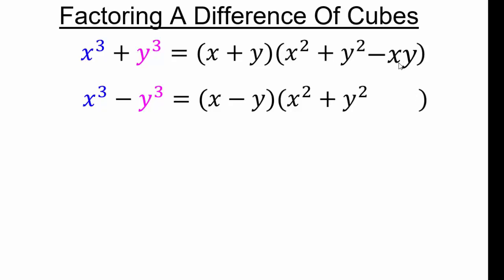So x squared remains x squared, and negative y times negative y is still positive y squared. But in the middle term, y times a negative makes it positive xy. That's really the only difference. So if you know one formula you can get the other by replacing y with negative y. For some of you it might still help to see it visually — that's what we'll do next.